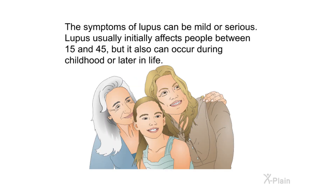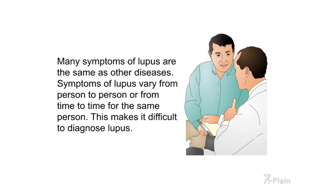The symptoms of lupus can be mild or serious. Lupus usually initially affects people between 15 and 45, but it can also occur during childhood or later in life. Many symptoms of lupus are the same as other diseases, and symptoms vary from person to person or from time to time for the same person. This makes it difficult to diagnose lupus.